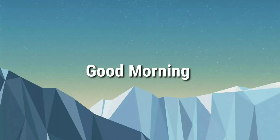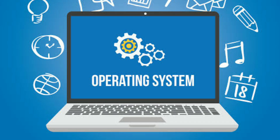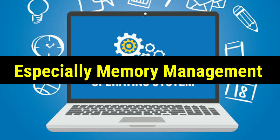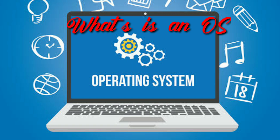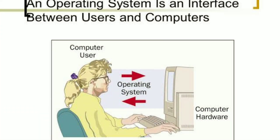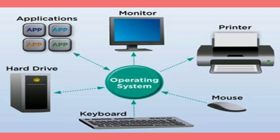Good morning students. Today we are going to discuss about various key features of operating system. Before going to the topic, we need to understand what is an operating system. You already know that operating system is a system software. It acts as an interface between user and hardware, as it communicates between user and computer. And it will manage all hardware and software.